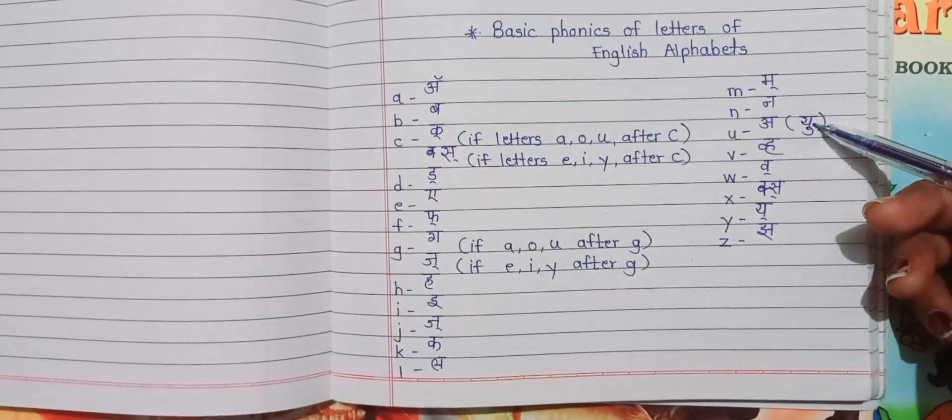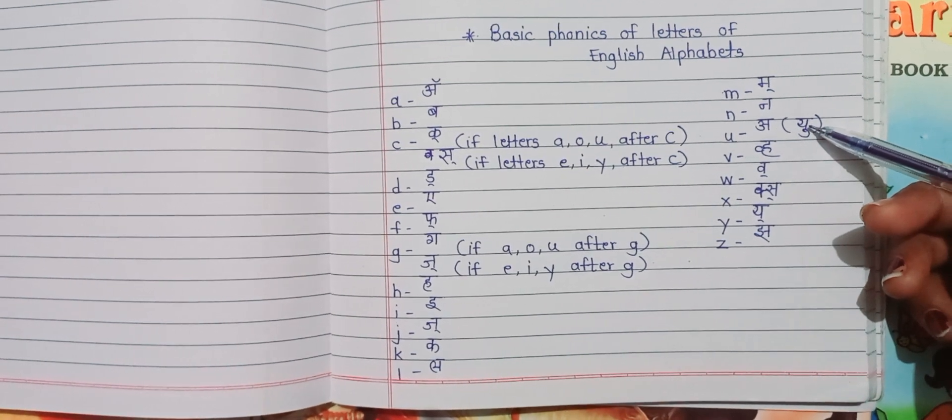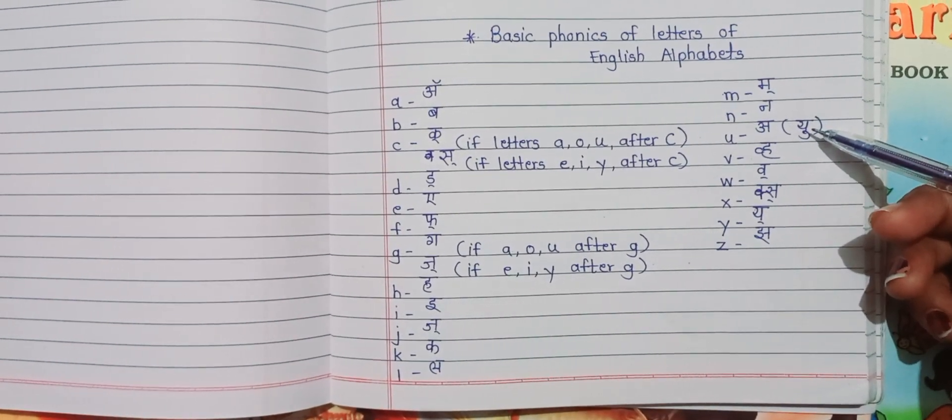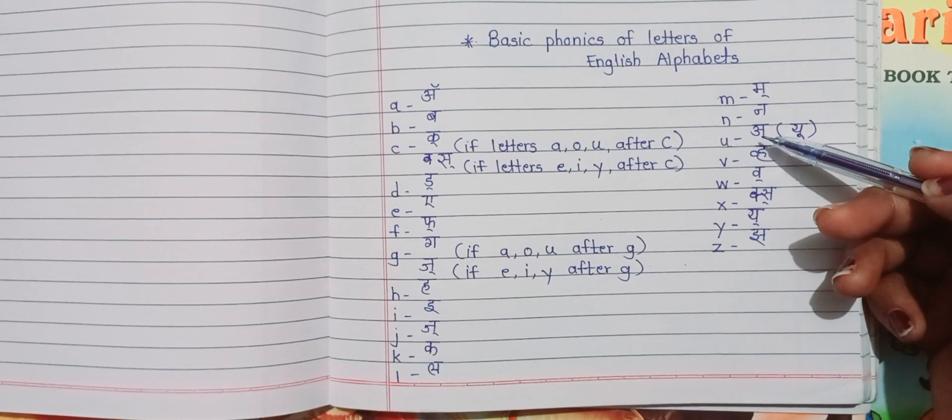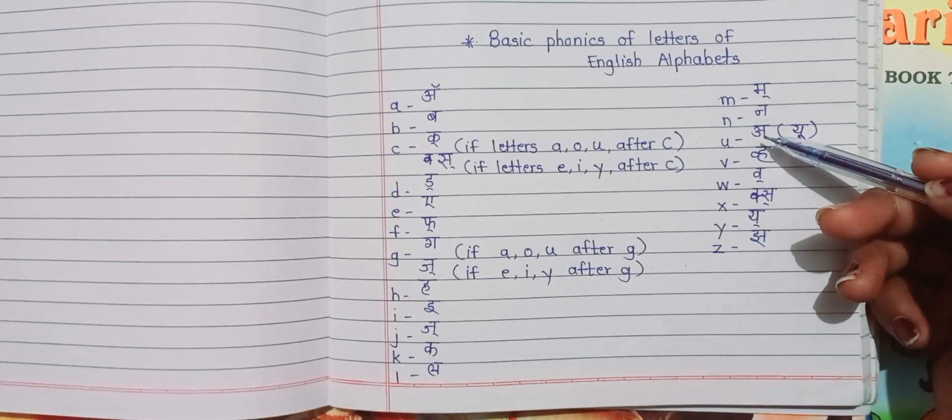U says O, sometimes uniform, sometimes U, like the words uniform, utensils, sometimes O, like the words umbrella.